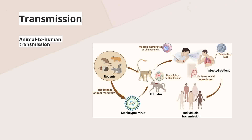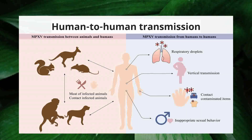How does it get transmitted? There are two main ways: from animal to human, and from human to human. Animal-to-human transmission originated from monkeys and occurs through two routes: direct contact through the skin or mucous membranes — if a human touches a monkey that has monkeypox, they may get it — or through breathing in air droplets. So transmission can occur through breathing or through touching infected skin, fluids, or contaminated objects.